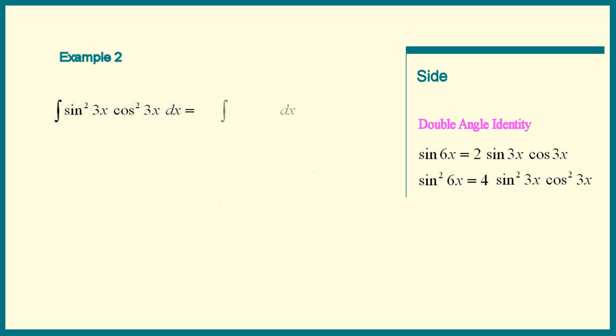Alright, back to the integral. Let's write in sine squared of 6x. To get rid of that 4, we'll put a 1 fourth outside.